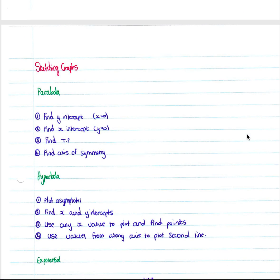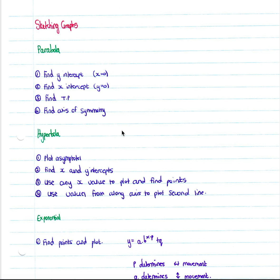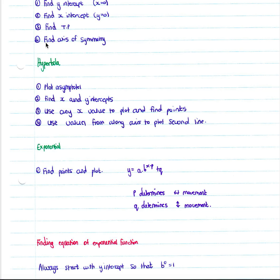When sketching graphs there are a number of things to find before you plot. For a parabola: find your y-intercept by making x zero; find your x-intercepts by making y zero; find your turning point using negative b over 2a then solve for the y value; and find your axis of symmetry which is halfway between your two x-intercepts. When plotting a hyperbola: first plot your asymptotes using the p and q values; find your x and y intercepts; use any x value to plot additional points for a general shape; and use values along the axis to plot the second branch.